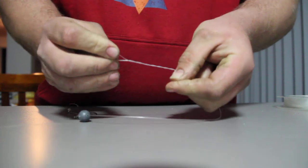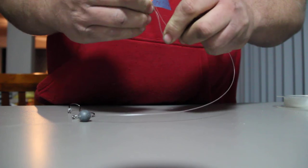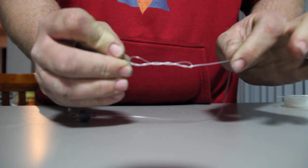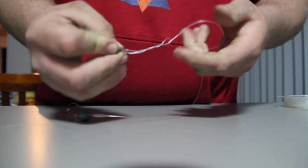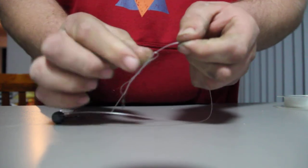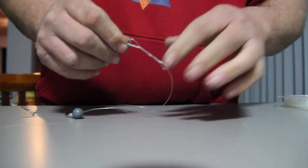Pass the tag end back through the loop you just created like so. Now you can do a clinch knot or improved blood knot by then passing the tag back through this loop up here. With 80lb, the line locks on itself and I don't worry about it.